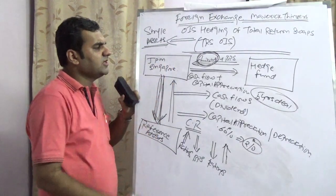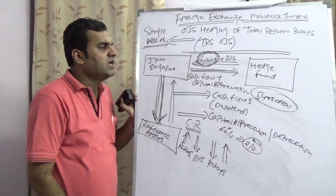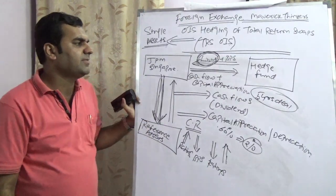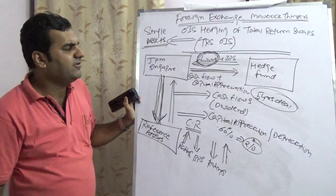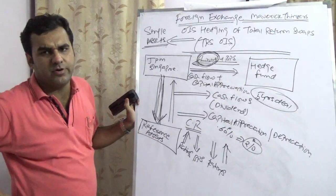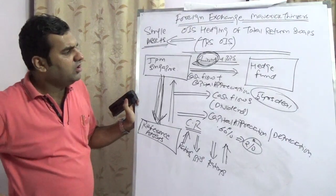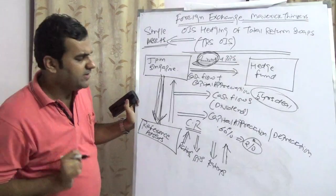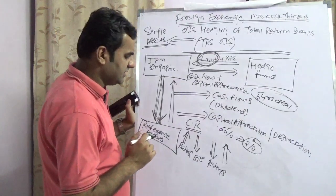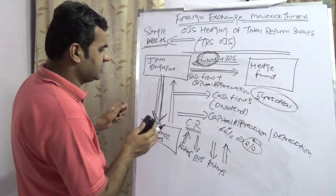JP Morgan Singapore is receiving LIBOR plus Q basis points. Hedge fund is paying LIBOR plus Q basis points and they want to hedge that. The hedge fund would enter into a structure which is known as overnight index swap.